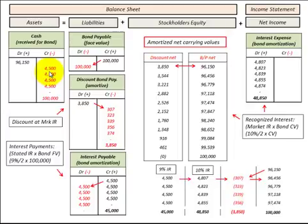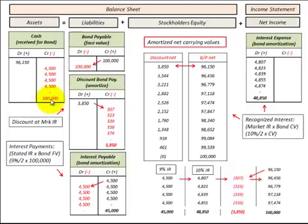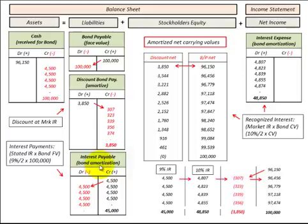Each period we reduce the interest payable by $4,500, crediting cash for $4,500 as the payment to bondholders. When the bond matures, we debit bonds payable for $100,000 and credit cash by $100,000. In summary, the discount on bonds payable is a balancing account between the cash account and bonds payable, and also a balancing account between the interest payable to bondholders and the interest expense we recognize each period on that bond.